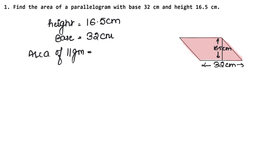So we have the area of the parallelogram — written as 'area of ||gm', that means parallelogram. What is the area of the parallelogram? It is base into height. The base is 32 cm and the height is 16.5 cm. The area unit is square centimeters, so it is cm².